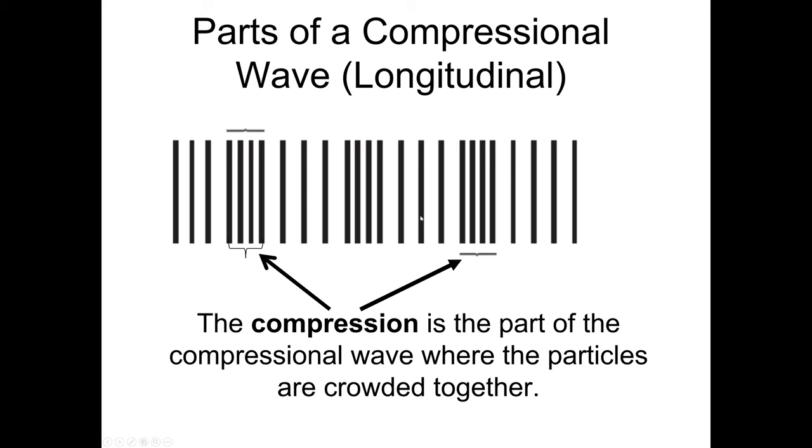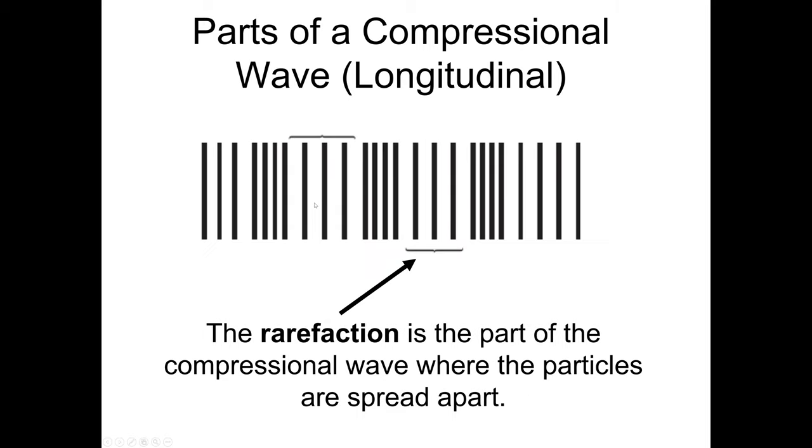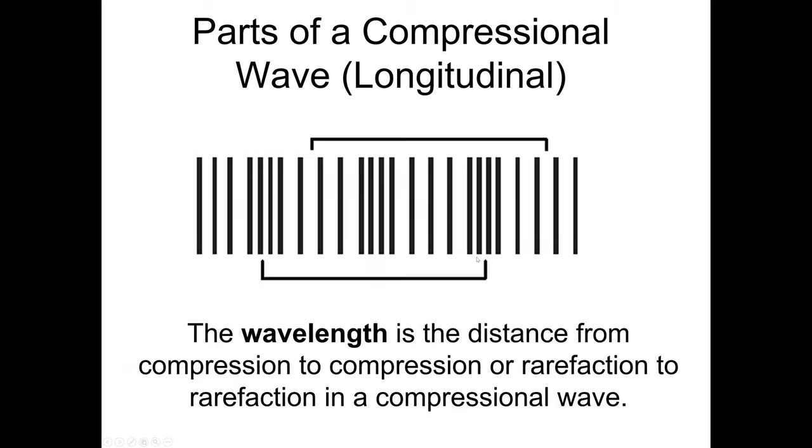Longitudinal or compression waves. Here it shows us a compression and a rarefaction. Compression is where you see it's compressed. Rarefaction is expanded. Here's the rarefaction. It's where you can see it's expanded versus compressed. The wavelength is from, again, same part to same part. So a compression to compression or rarefaction to rarefaction.